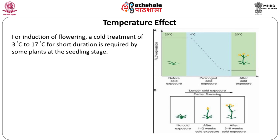For induction of flowering, a cold treatment of 3 to 17 degrees centigrade for a short duration is required by some plants at the seedling stage. The requirement of cold treatment in bringing about vernalization is determined as a reduction in the number of days between germination and flowering. After this brief exposure to cold, plants need to be grown at optimum temperature to enable metabolic processes for vegetative growth and development.